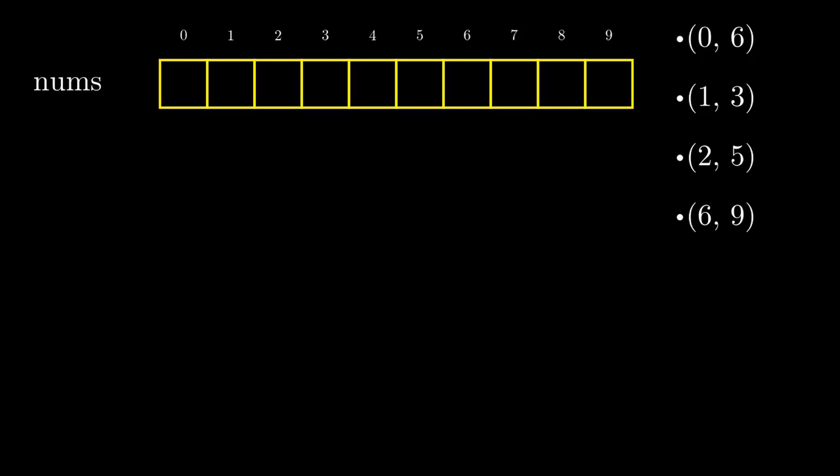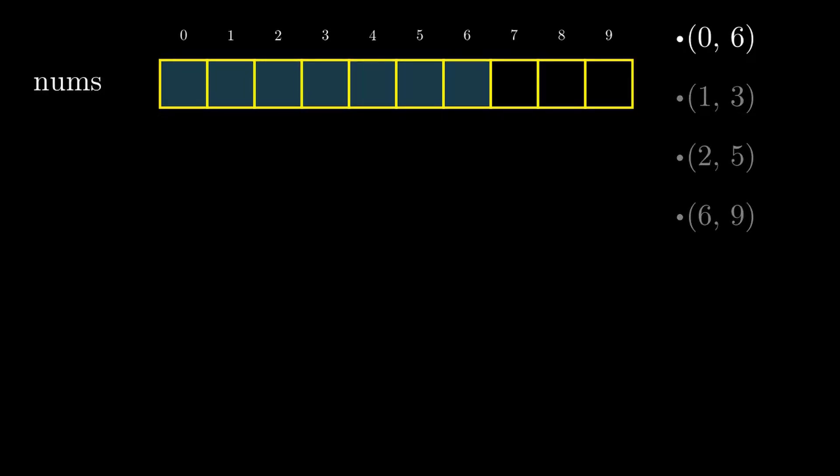So how do we approach this problem? For a second, let's forget about the elements of nums and only think about requests. We have some requests in range start to end which can be overlapping for different requests. It is evident from the visuals that the square that occurs in the most number of requests will have the highest weight.